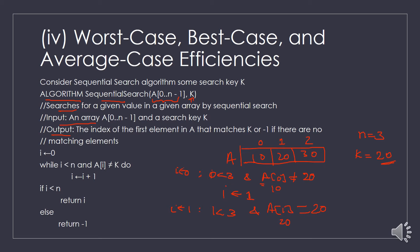Since a[1] equals the key element 20, we exit the while loop. We then check: if i is less than n — yes, 1 is less than 3 — so we return i, which is 1. The output is the index of element 20 in the list, which is position 1. If the element were not found, we would return minus 1.